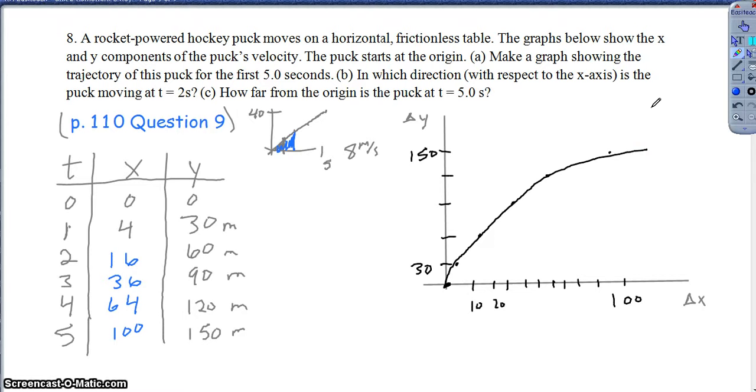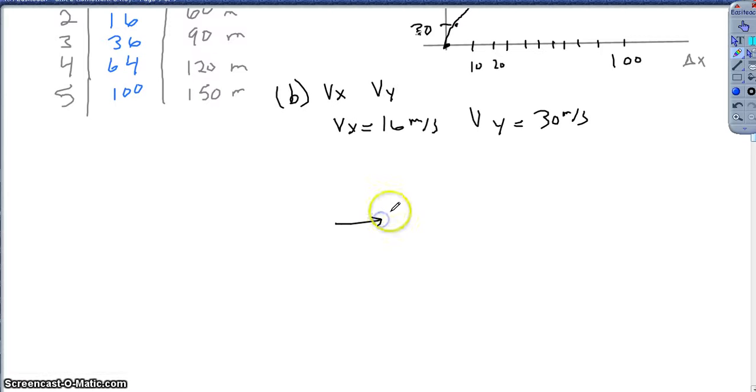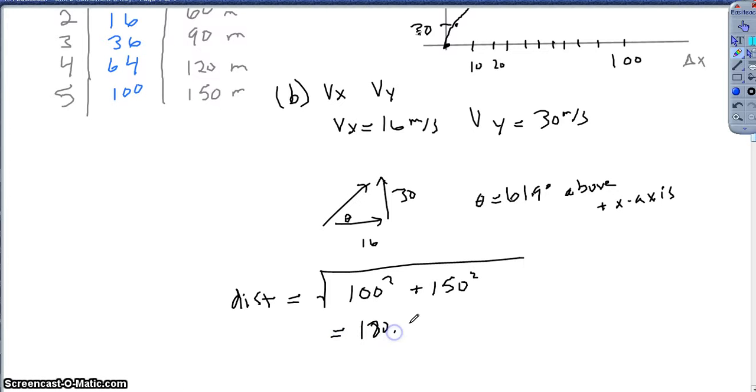So then for part B, in which direction is the puck moving at 2 seconds? Well, all I have to do really is, for part B, I have to identify what are the x and the y components of the velocity. Well, if I just look at the graph, I can see that the x component, again, because it was going up by 8 meters per second, is 16 meters per second. And the y components of the velocity is always 30 meters per second. So then to find my direction, I simply build myself a right triangle, right? And I find the angle involved. Okay, so I just build a right triangle, and I find the angle involved. So as you guys are doing that, I'm obviously not there yet, but doing this quickly so I don't run out of time. Over 16, up 30, right? And again, just solving for that angle with respect. And I get theta equals 61.9 degrees above the positive x-axis. And then my third part, what's the distance from the origin? All I have to do for that is the Pythagorean theorem, using my final coordinates of 100 and 150, right? So just imagine building yourself a triangle there, and we get about 180.3 meters.